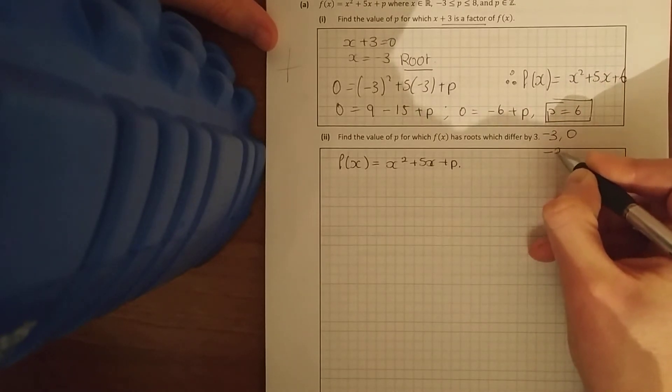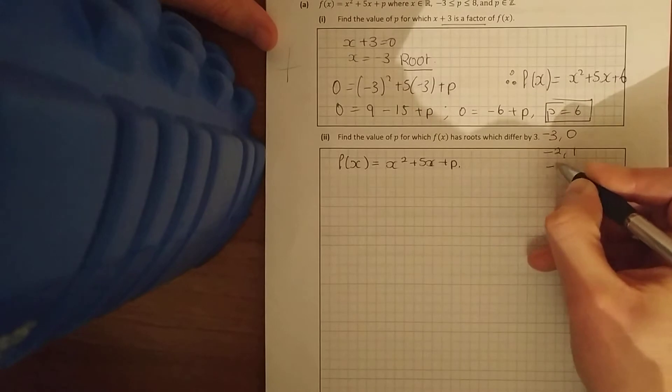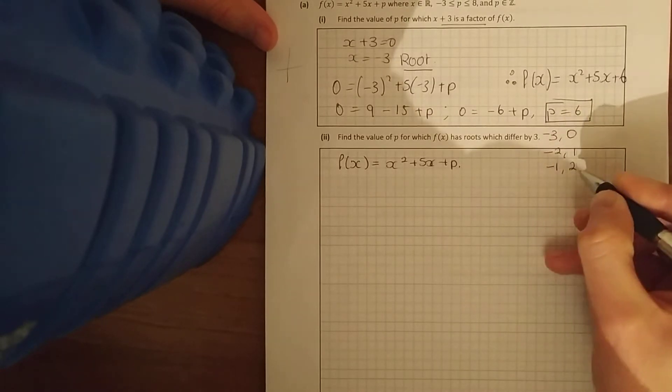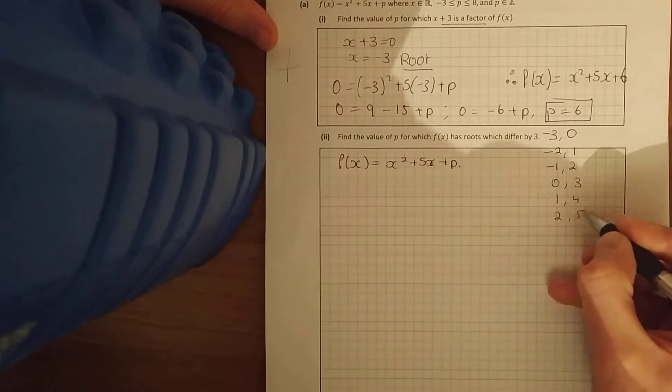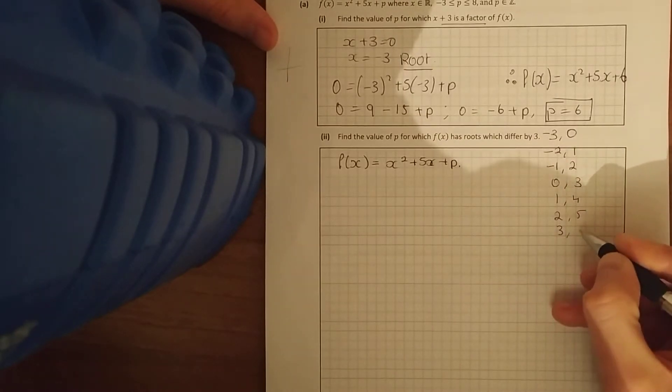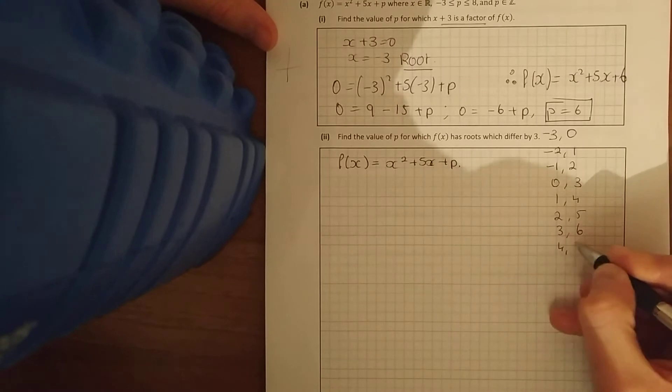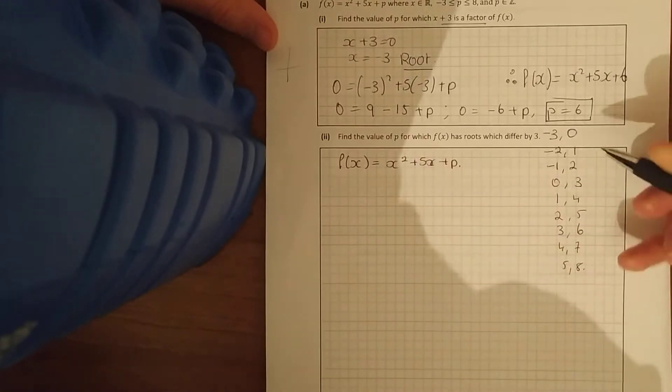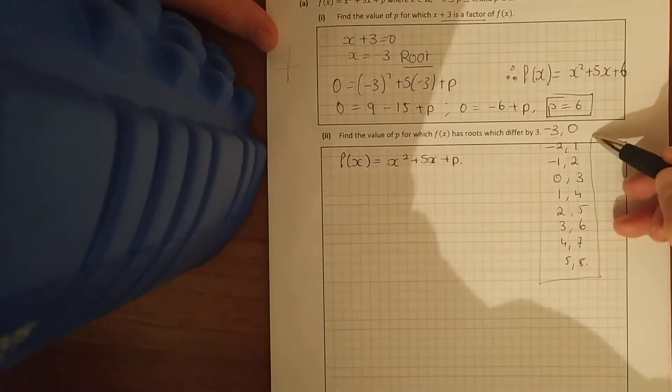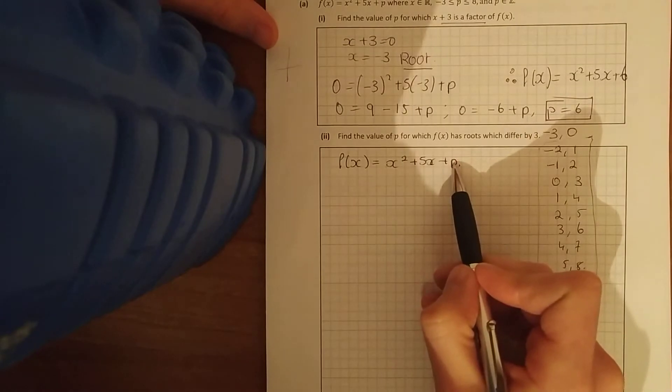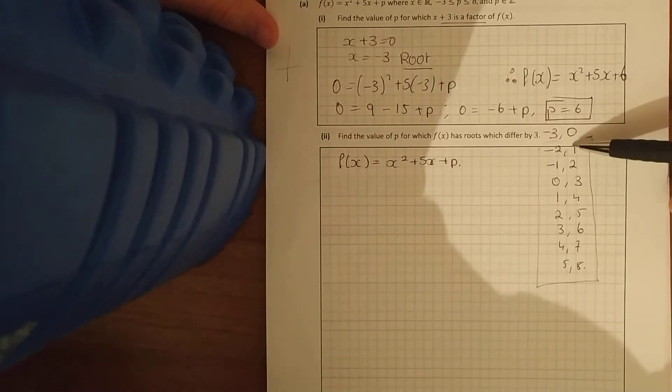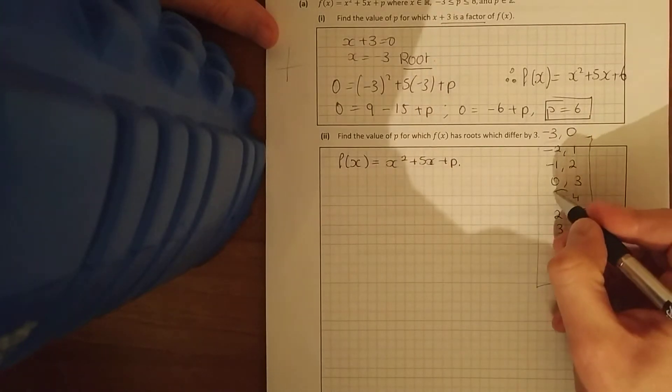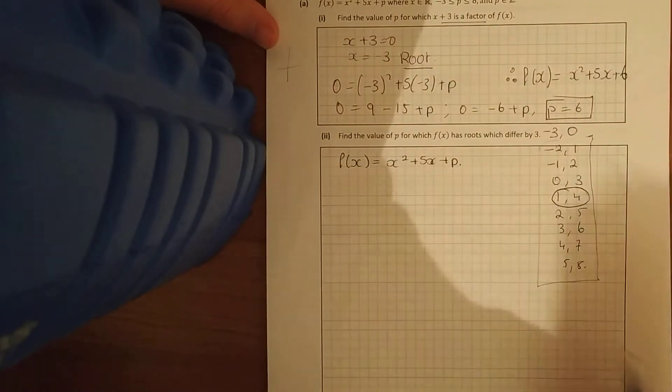I can go minus 3, 0 differ by 3, minus 2 and 1, minus 1 and 2, 0 and 3, 1 and 4, 2 and 5, 3 and 6, 4 and 7, 5 and 8. I've written down all of these. In a quadratic you always say what numbers multiply to give me this and add to give me this. So how can I get a 5 from any one of those?